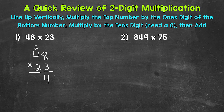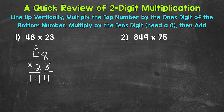Three times four is 12, plus the carried two is 14. We write our four, and then the carried one — there aren't any more places to the left, so we bring it straight down and we end up with 144. We are done with that three in the ones place, so I'll cross it off, and done with that carried two — I'll cross that off as well, so we know we can move forward.